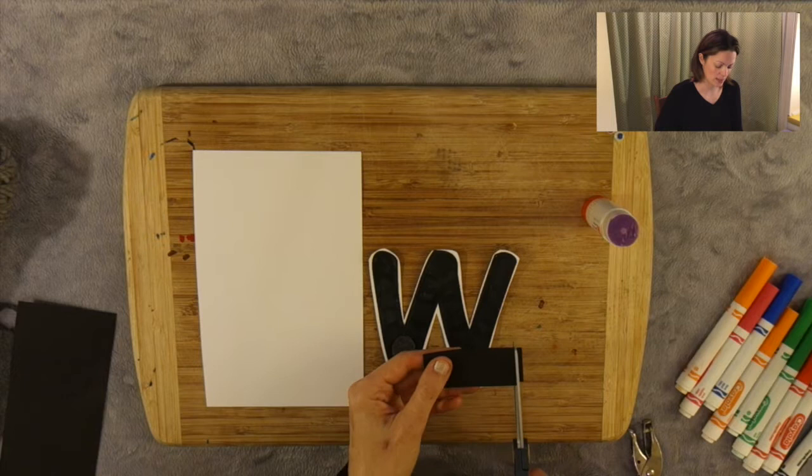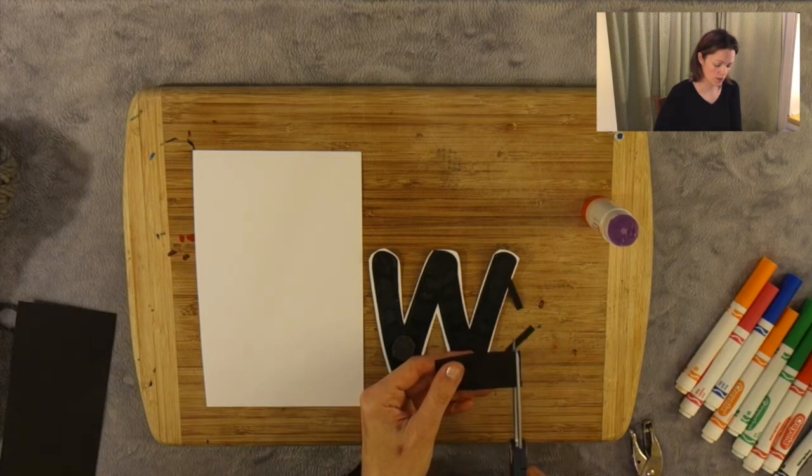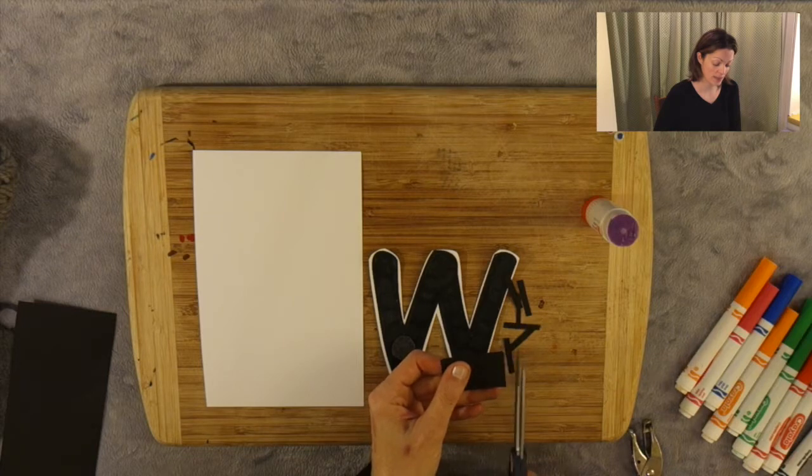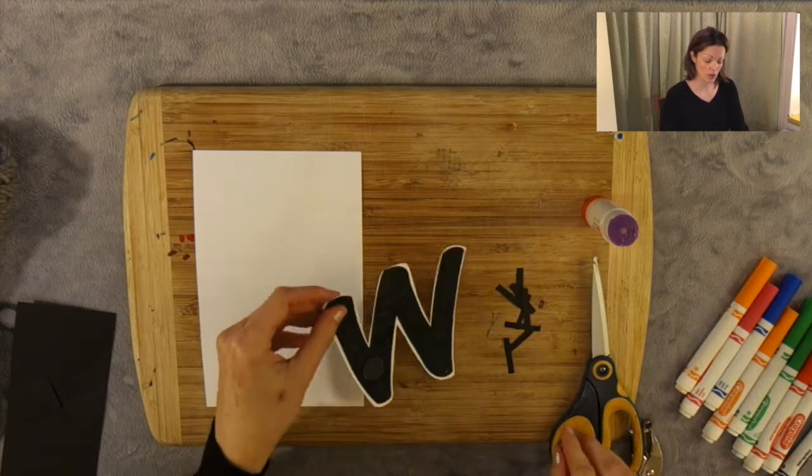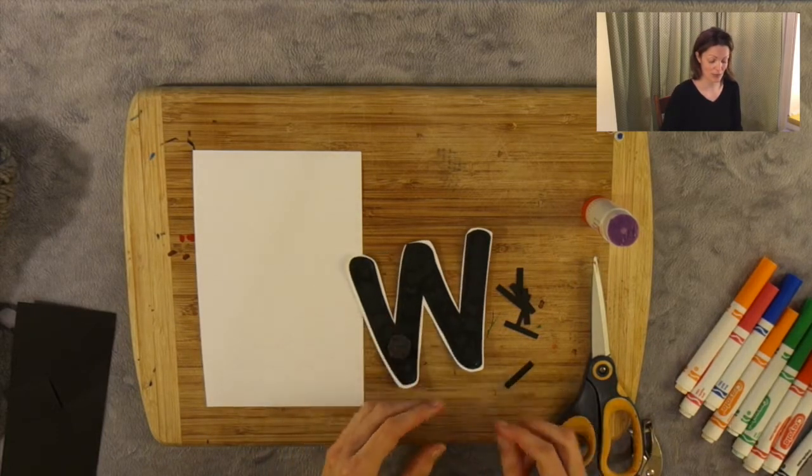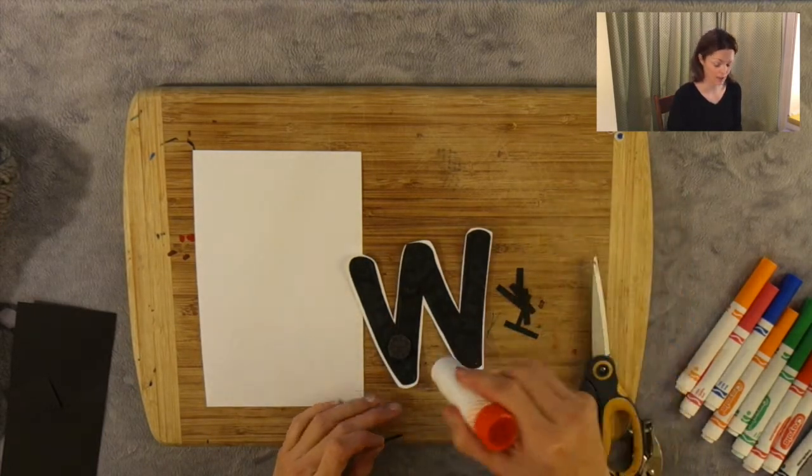So we're going to count eight little pieces. One, two, three, four, five, six, seven, eight. The reason I count them and cut them at first and not do them individually is so I can keep better track of how many legs I have.